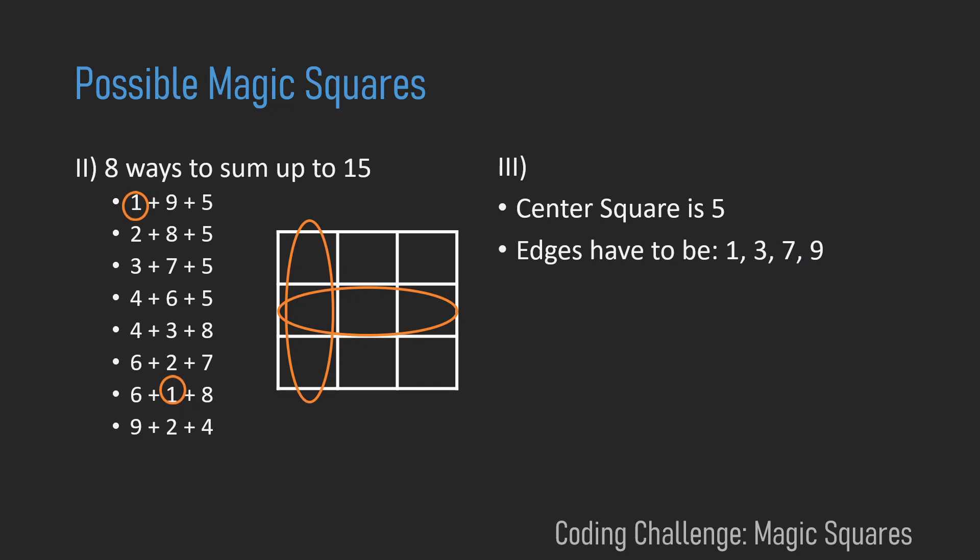And the same applies to the 3 because the 3 appears two times, the 7 because the 7 appears two times, and the 9 because the 9 appears twice. Now we know what the center square has to be, and now we know what the edges have to be.